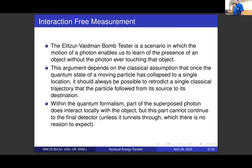The notion that we get an interaction-free measurement typically follows from the assumption that once we know where the particle has ended up, we can retrodict a single classical path that the particle would have followed from the source to the final detector. If you don't make that assumption, the wave function spreads out throughout the interferometer, and there is some part of the quantum state that's going where the bomb is. Do you really think it's interaction-free if the bomb fully blocks the particle from getting past the bomb and to the detector?